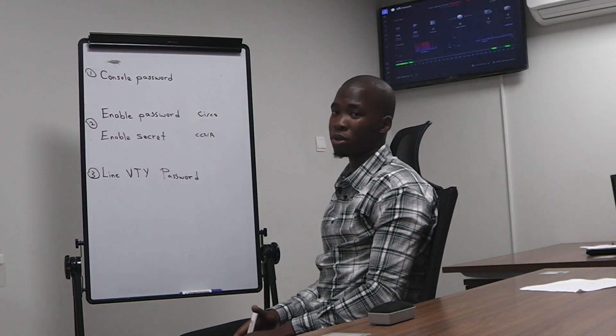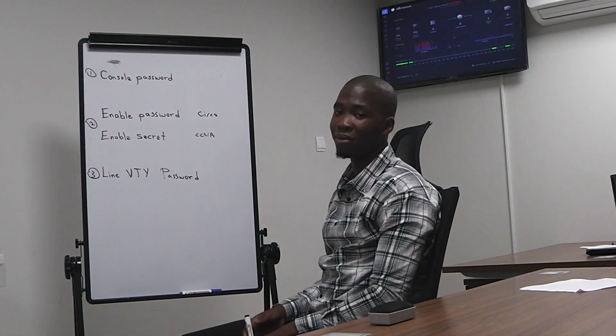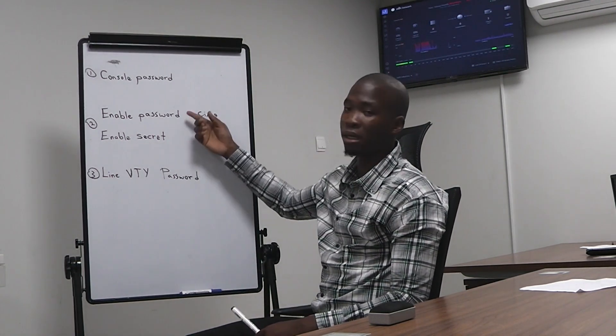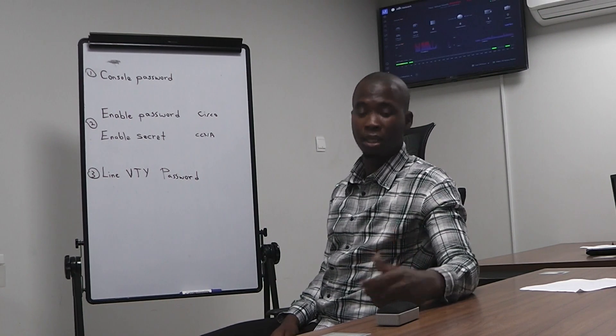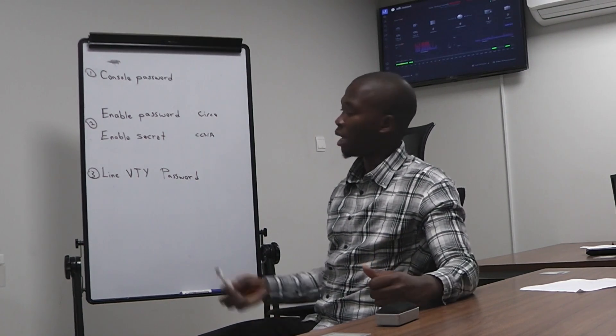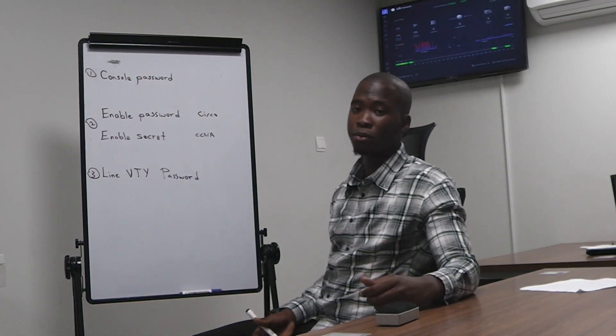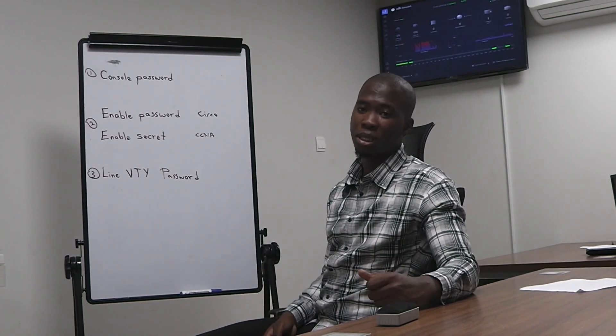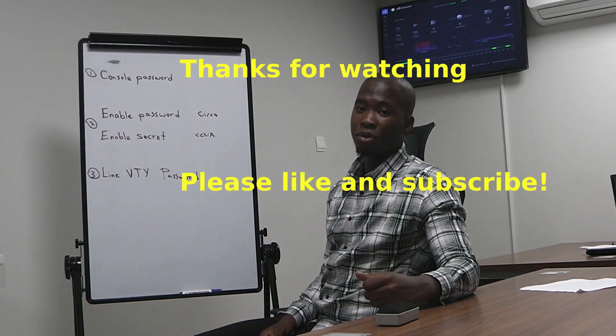To recap: the console password restricts access when someone uses the console port for device configuration. The enable secret and enable password prompt for a password when moving from user EXEC to privilege EXEC mode — enable secret is encrypted while enable password is not. Under line VTY we have Telnet and SSH — Telnet is unencrypted while SSH is encrypted — and these prompt for a password when accessing the device remotely over the network. We will have other videos where we configure each of these separately. Thank you very much.